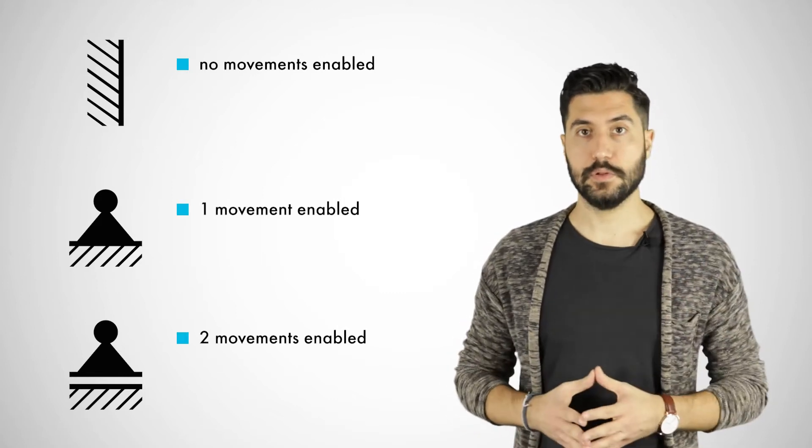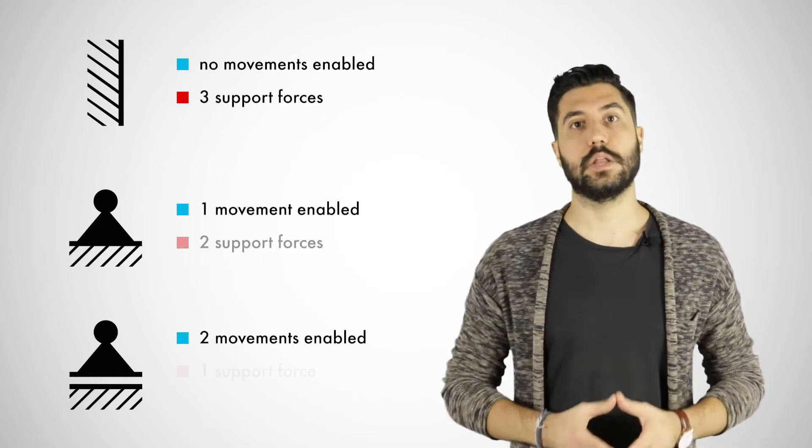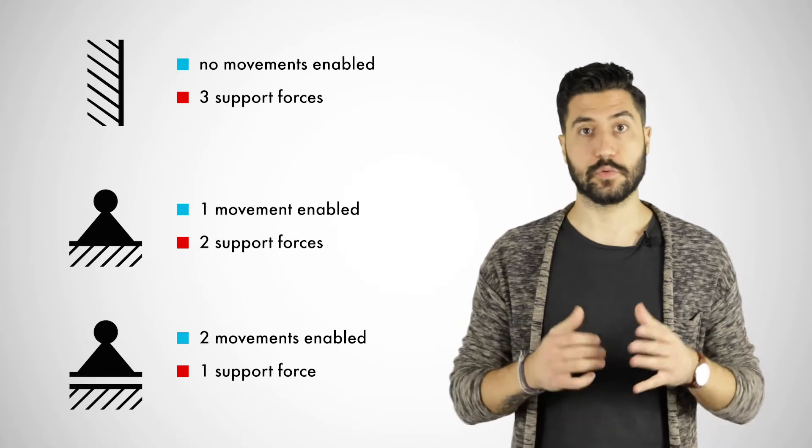There are many different types of supports in structural analysis and design, but the three most common ones are rigid supports, pin supports and roller supports. Those three differ mainly in the number of movements they enable and thus the number of forces they can resist, also known as support forces.